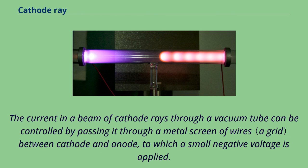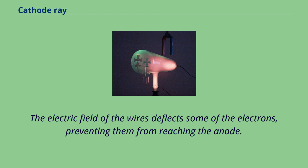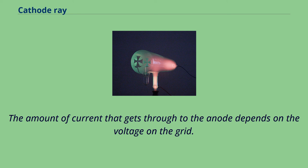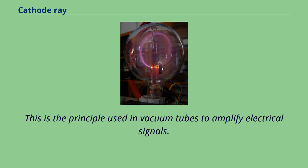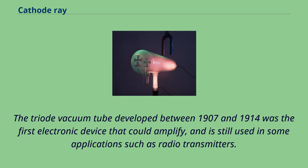The current in a beam of cathode rays through a vacuum tube can be controlled by passing it through a metal screen of wires between cathode and anode, to which a small negative voltage is applied. The electric field of the wires deflects some of the electrons, preventing them from reaching the anode. The amount of current that gets through to the anode depends on the voltage on the grid. Thus, a small voltage on the grid can be made to control a much larger voltage on the anode. This is the principle used in vacuum tubes to amplify electrical signals. The triode vacuum tube developed between 1907 and 1914 was the first electronic device that could amplify, and is still used in some applications such as radio transmitters.